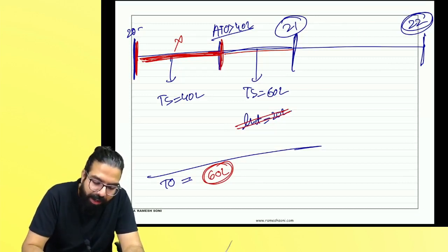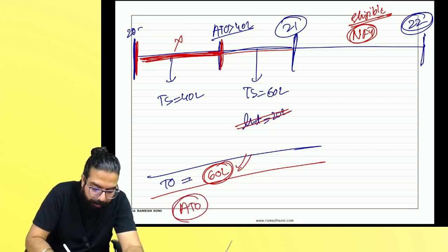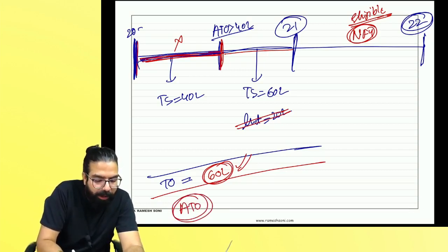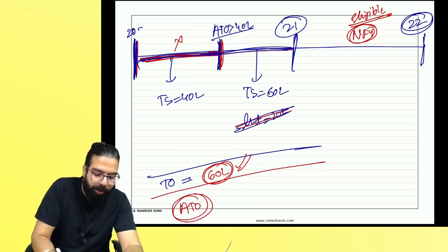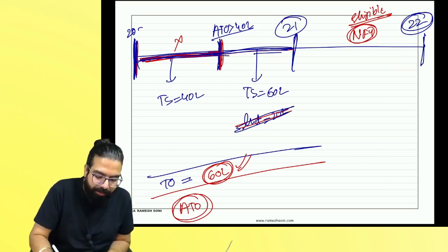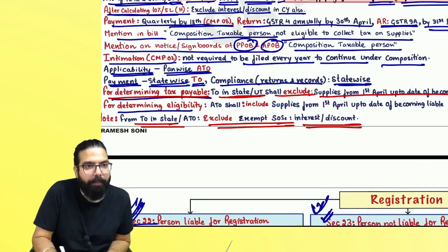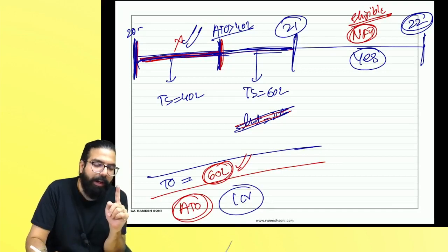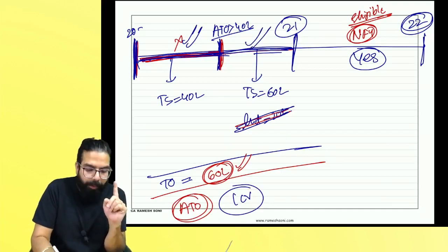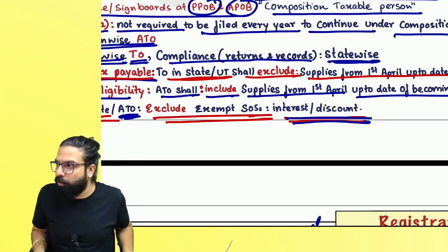Now, for determining eligibility for the next financial year, you need aggregate turnover. Remember: aggregate turnover includes supplies from 1st April up to the date of becoming liable for registration — that amount is also included. But interest is excluded from aggregate turnover as well. So in the example: 40 lakh + 60 lakh = 1 crore aggregate turnover. Are you eligible? Yes, because 1 crore is within 1.5 crore.